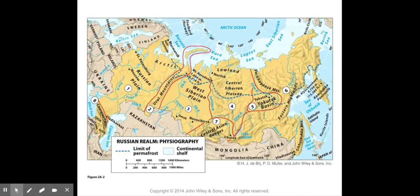We have the Russian Plain, the Ural Mountains, the West Siberian Plain, the Central Siberian Plateau, the Yukos Basin, the Eastern Highlands, and the Central Asian Ranges.